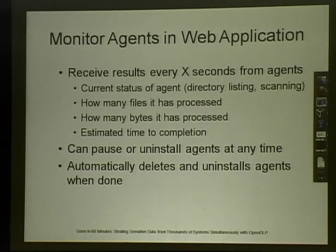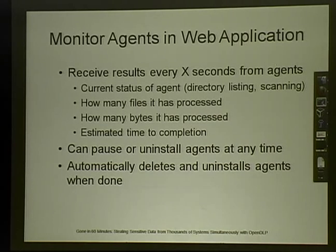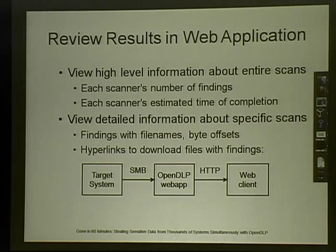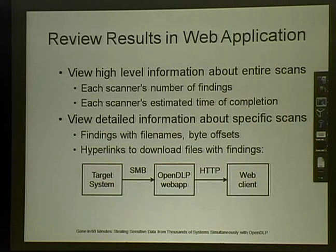Inside the web app, while running or after the agent is done, you receive results periodically. The data sent includes the current agent status — whether it's doing whitelist/blacklist processing or actually scanning — plus a progress bar showing files and bytes scanned so far. The web app can pause and uninstall agents at any time. You can also drill down into findings to see that a specific file has sensitive info at a specific byte offset, and download the file to verify.